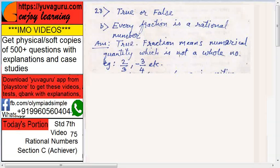Means which has to be expressed in terms of p upon q, where q should not be equal to 1. So 2/3, -3/4 - so every fraction, and what is rational number then? Just now we saw p upon q. So this can be p, this can be q. So every fraction is a rational number. True.